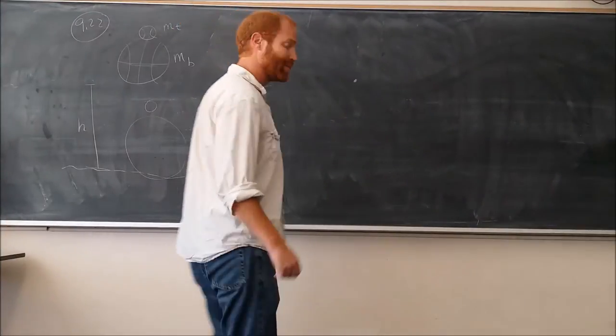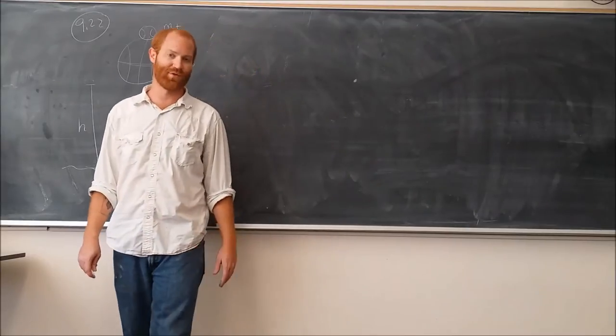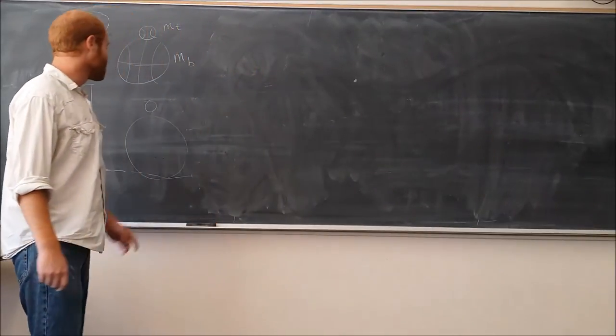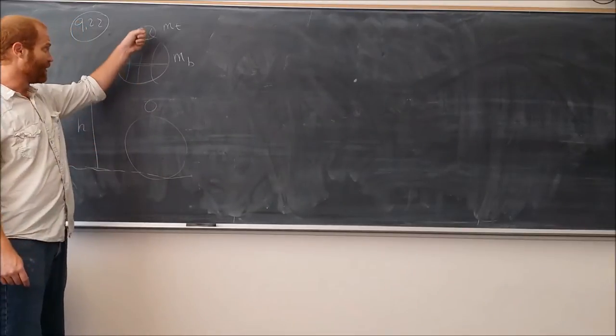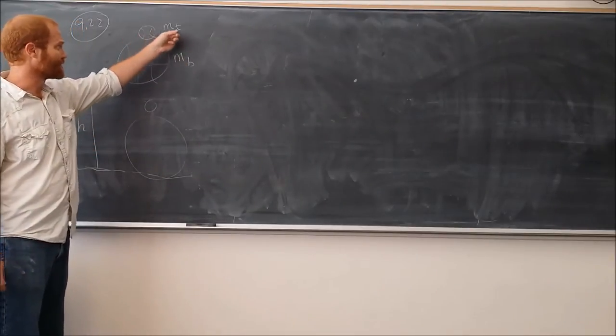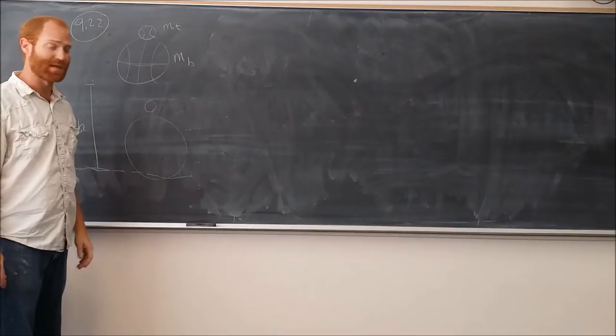Alright, we're going to do problem number 22 from Chapter 9 of Serway Jewett, 8th edition. The problem involves a basketball that falls through some height h, represented here, with mass MB. The mass of the tennis ball is MT. The tennis ball also falls through the same height.